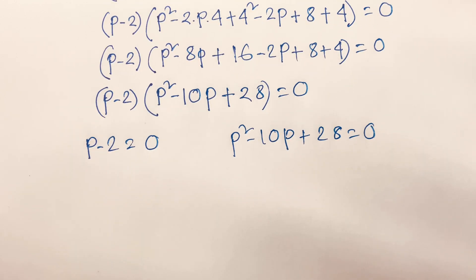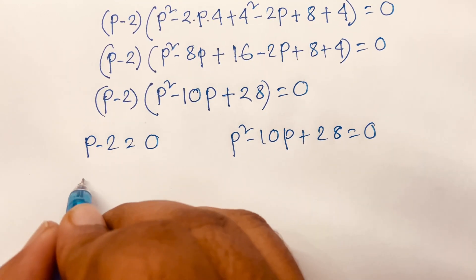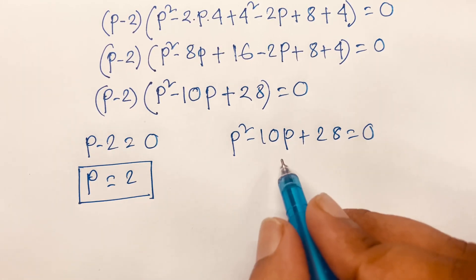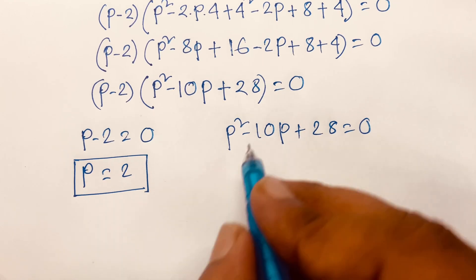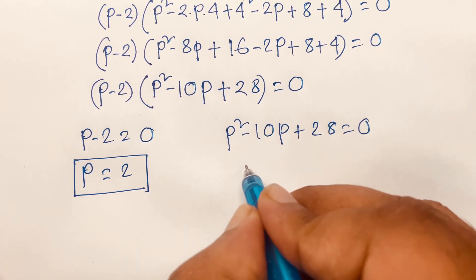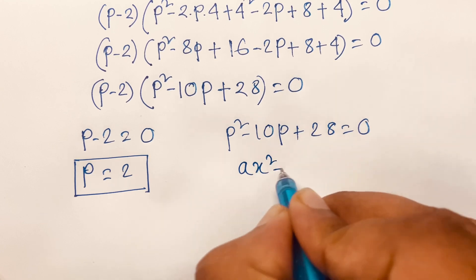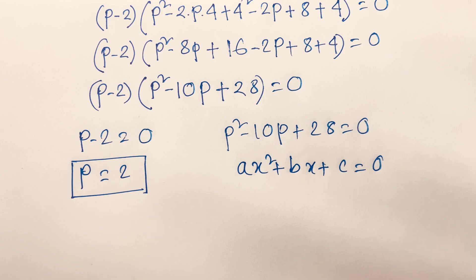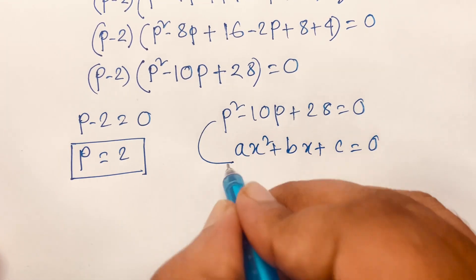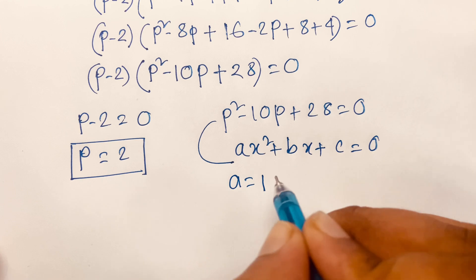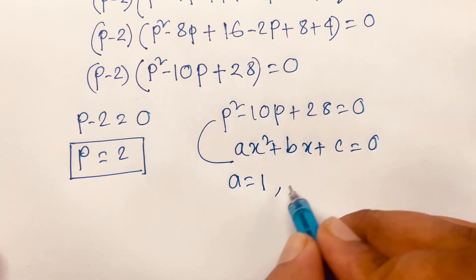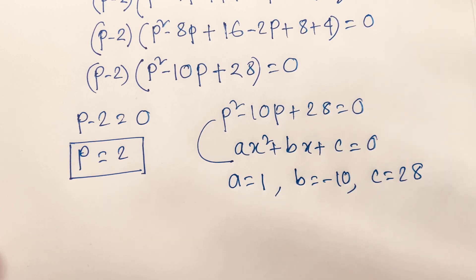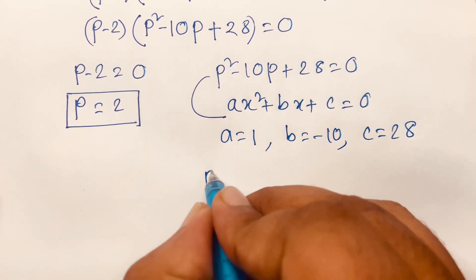Setting p minus 2 equals 0 gives p equals 2. The second factor p² minus 10p plus 28 equals 0 is a quadratic equation. Comparing with the standard form ax² plus bx plus c equals 0, we identify a equals 1, b equals minus 10, and c equals 28.